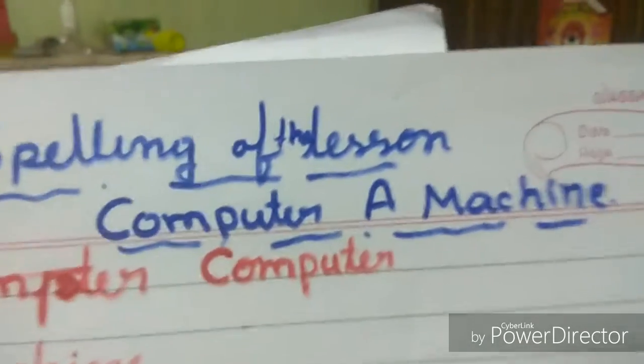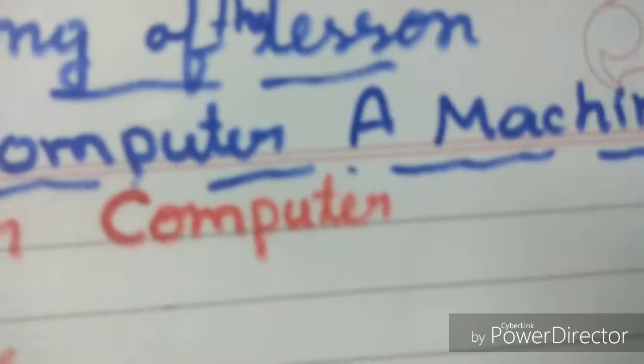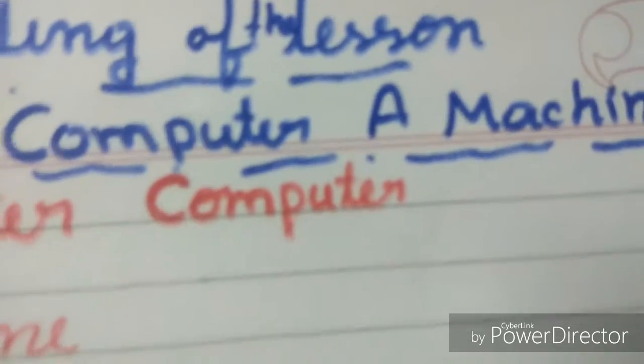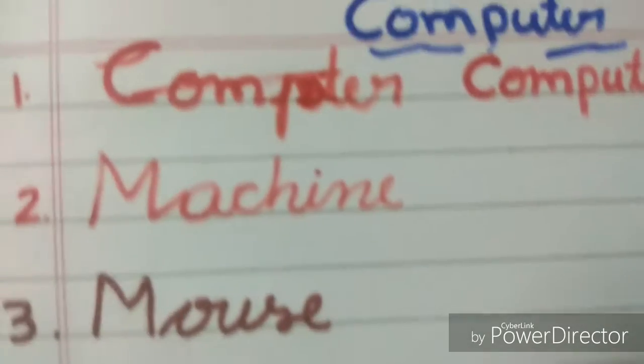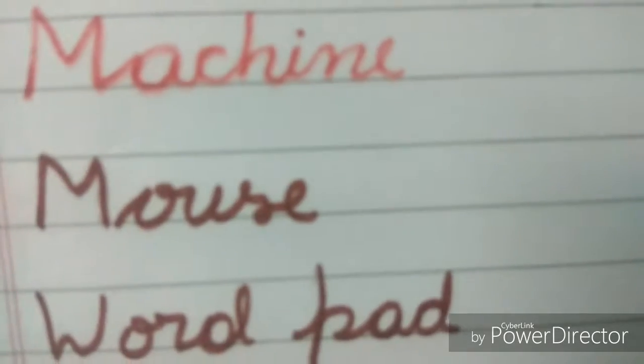Spelling of the lesson. Computer — C-O-M-P-U-T-E-R. A machine. Machine — M-A-C-H-I-N-E.